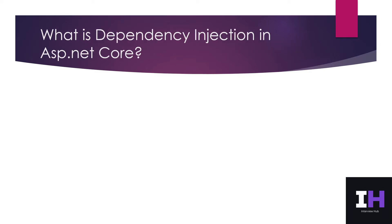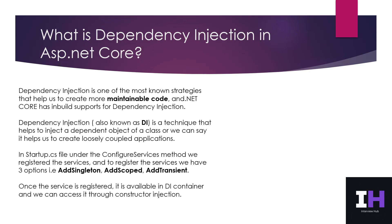Q5. What is dependency injection in ASP.NET Core? Dependency injection is one of the most well-known strategies that helps us to create more maintainable code, and .NET Core has built-in support for dependency injection. Dependency injection, also known as DI, is a technique that helps to inject a dependent object of a class, or we can say it helps us to create loosely coupled applications.